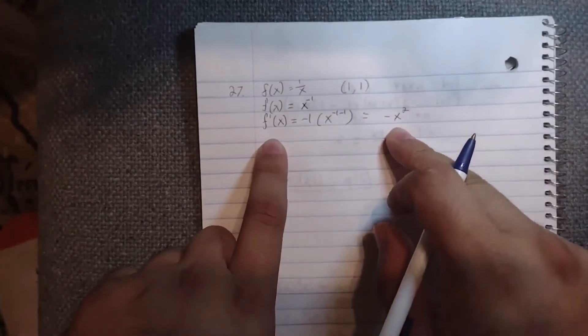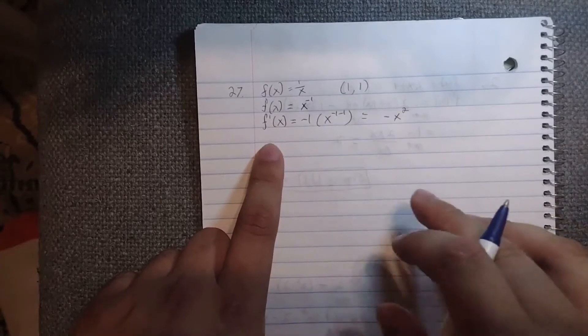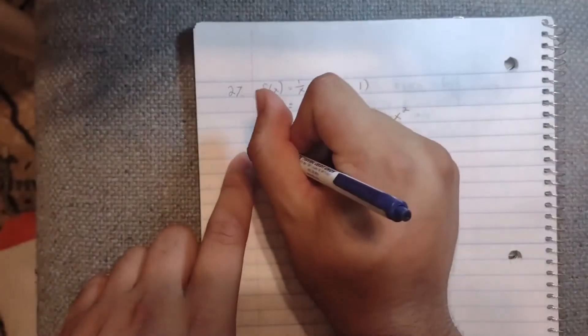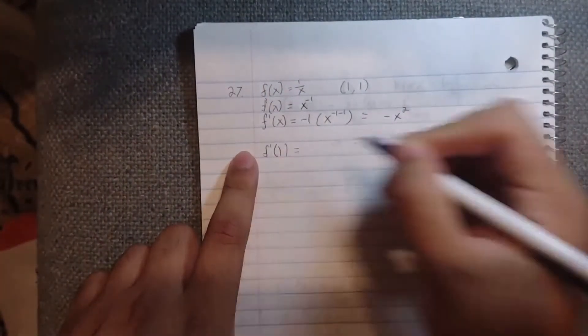Now that we know what the derivative is, we can find the slope or the value of the derivative function at that point. The point we're evaluating is (1, 1), so f'(1) equals—we just plug 1 in here—minus 1.